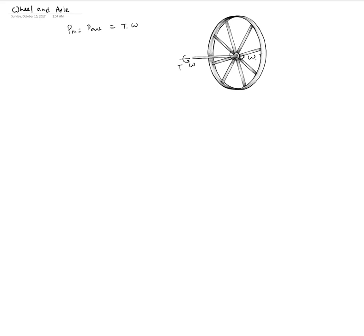Now let's look at the axle itself. The axle has radius r1. If it is rotating with angular speed omega, we can say something about the linear velocity of a peripheral point. Looking at a point A on the surface of the axle at radius r1, the velocity of point A is simply omega times r1.